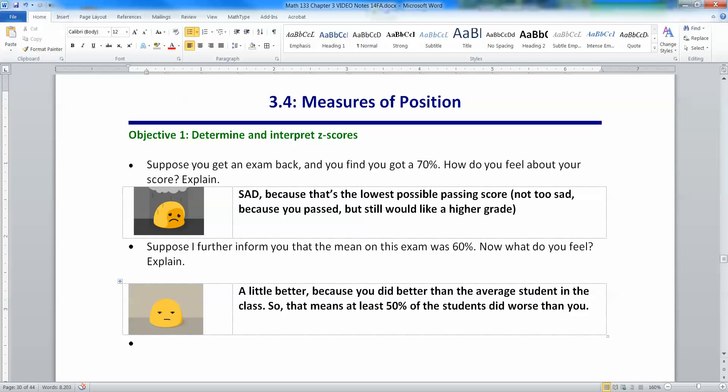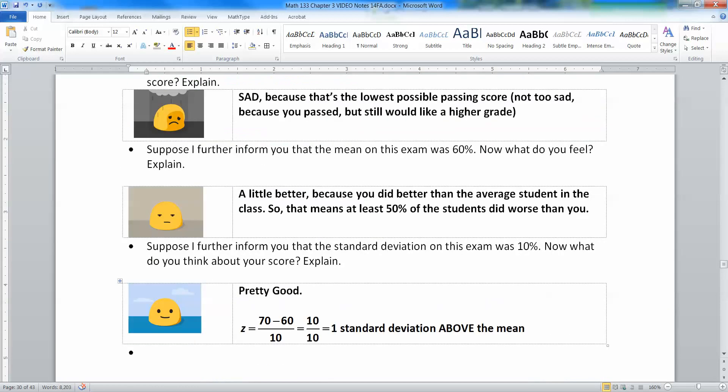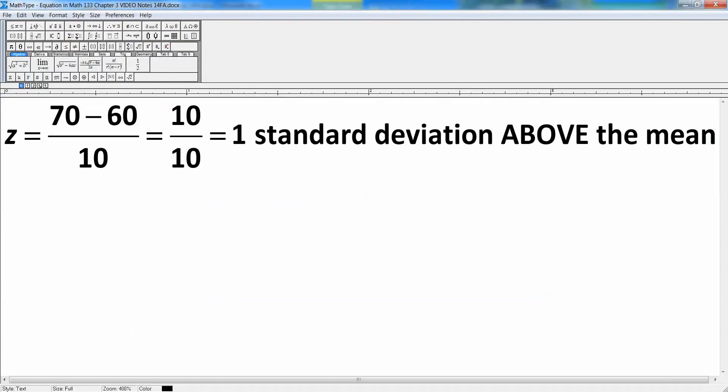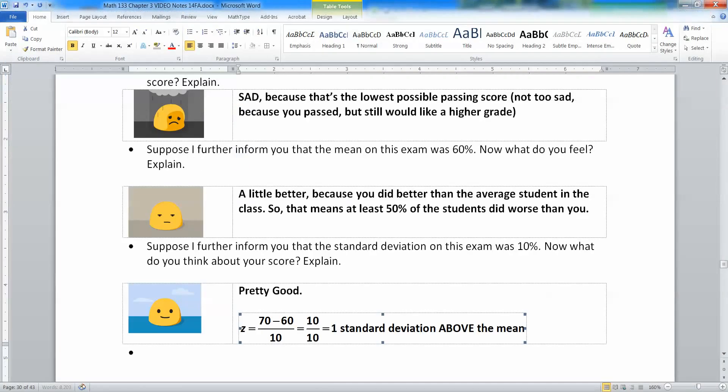Let's take it one step further because that's just dealing with the mean. What if we knew the standard deviation? Suppose I further inform you that the standard deviation on this exam was 10%. Now how do you feel? Pretty good because I'm thinking, if it's 10, then I scored 70, the mean was 60, so I was 10 above the mean. And if I'm 10 above the mean and the standard deviation is worth 10, then I was one standard deviation above the mean, which is pretty good. I'm feeling even better about myself.